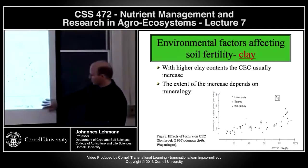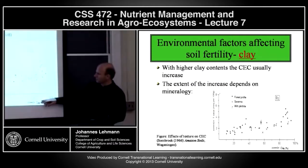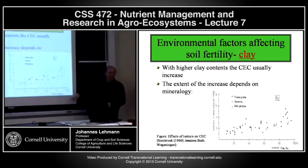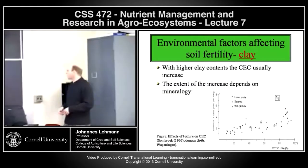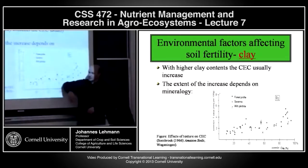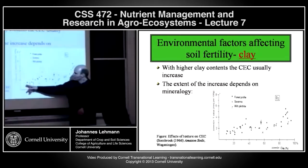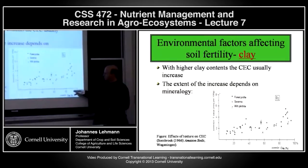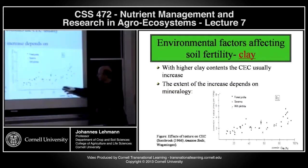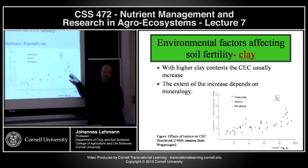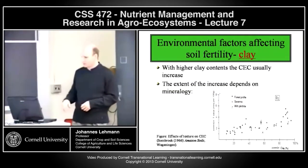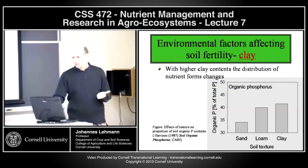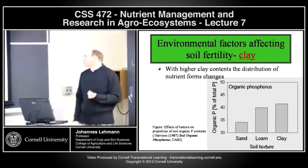Here is an example where clay percent was plotted for soils in the Amazon basin, ranging from 10% to 90% clay — a huge spectrum. What they called the T value in the 1960s, which is cation exchange capacity, doesn't really increase much. We would expect a much steeper increase, but the difference between having 10–20% clay versus 60–80% clay is not that significant. So it's not only clay percent but also clay mineralogy that determines cation exchange capacity.